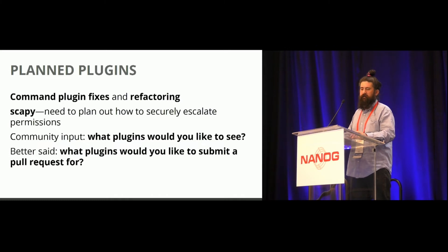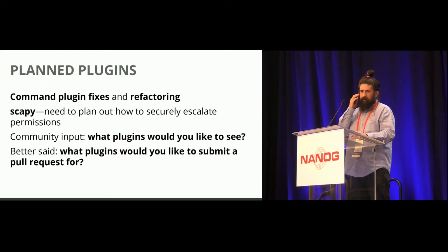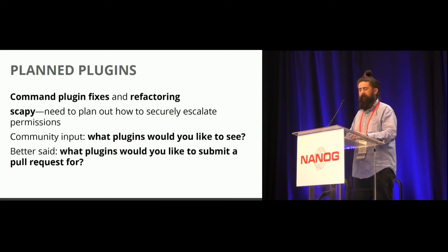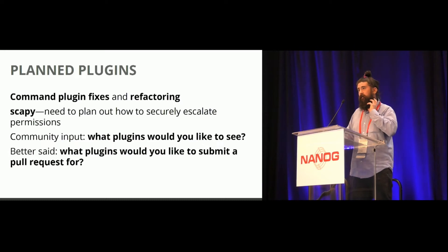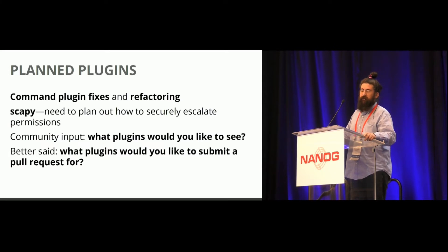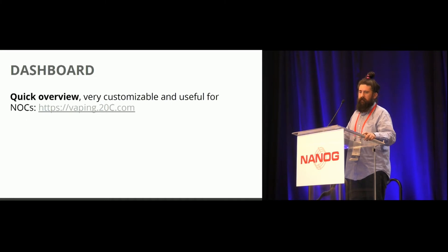We want to redo the command plugin to make it a little easier to use, because right now it's mostly just copy-and-paste to do your command plugins. I did write a Scapy plugin, which is a packet manipulation tool, but it requires root and I didn't have time to figure out how to secure that before NANOG. I'd really like to hear from people about what other ideas they'd want to see, or better yet, if you want to do a pull request. The MTR was mostly community-driven, and we think the next iteration is going to be really good.